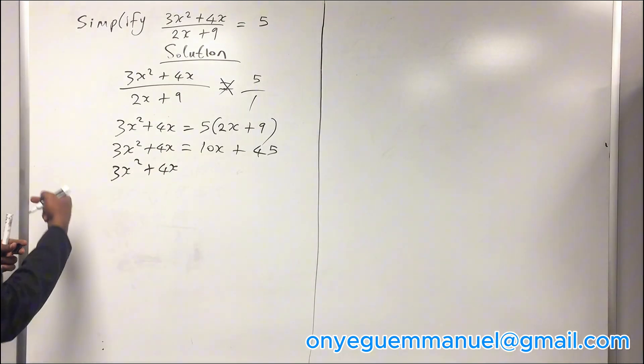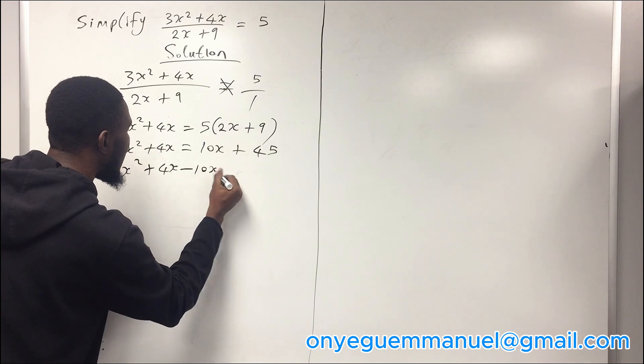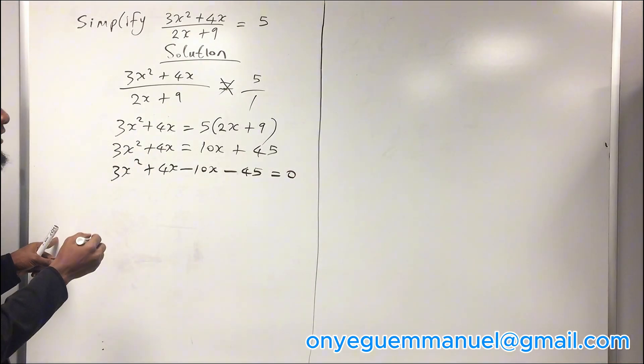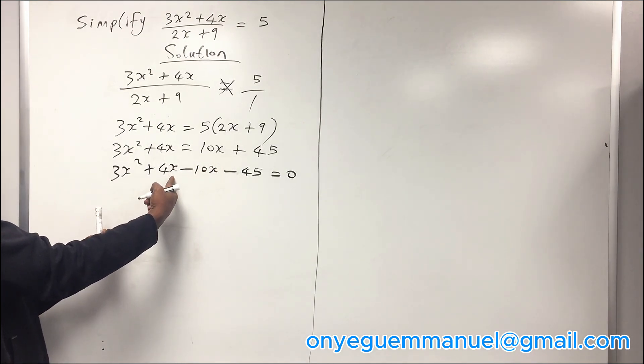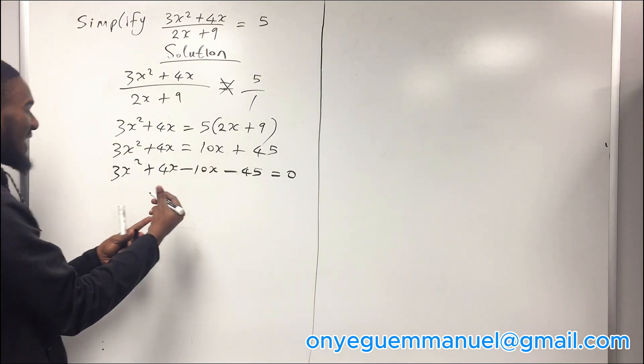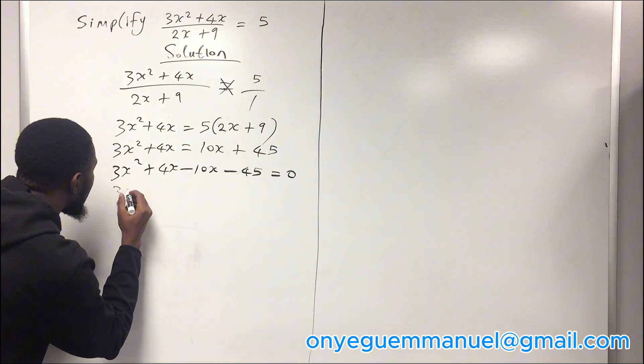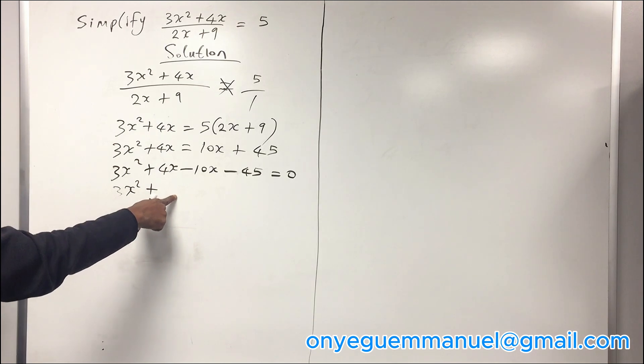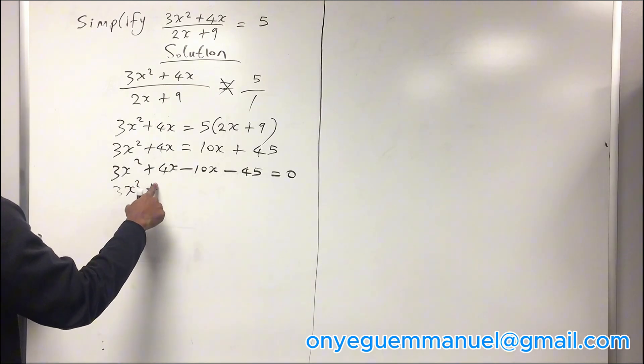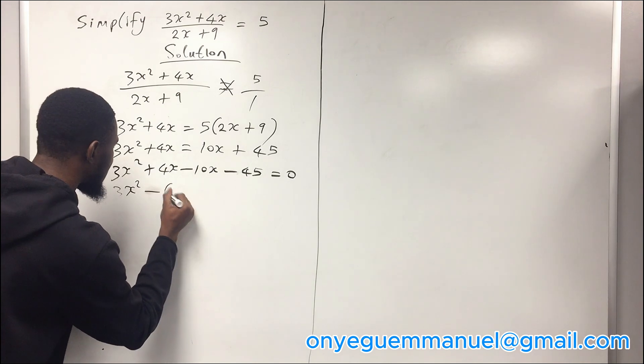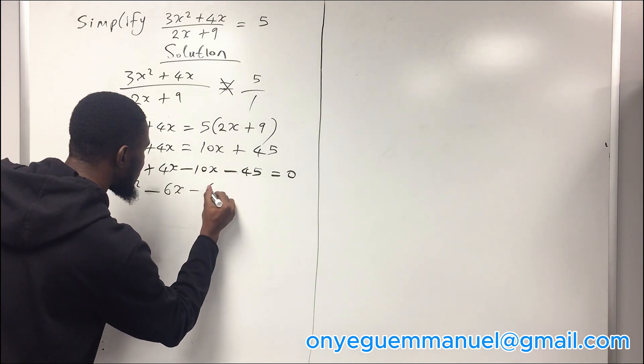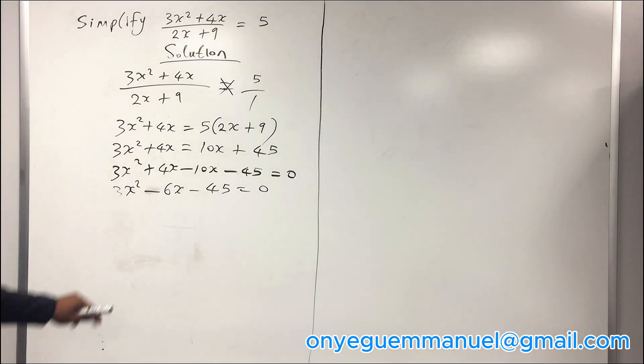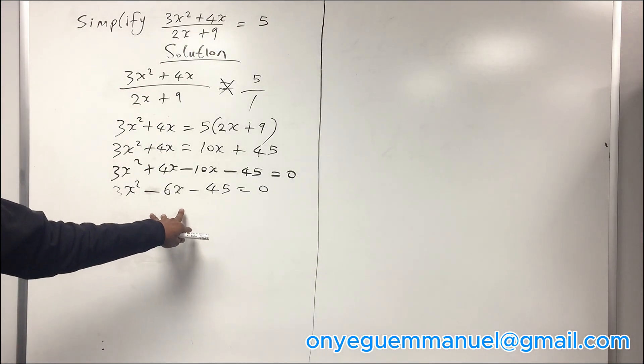You have 3x squared plus 4x minus 10x minus 45 equals 0, because when the sign of addition crosses the sign of equality it changes to minus. Then collect like terms. 3x squared plus 4x minus 10x will give you minus 6x minus 45 equals 0.